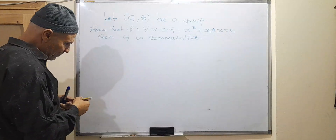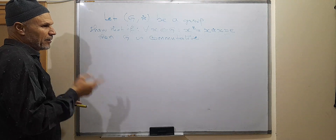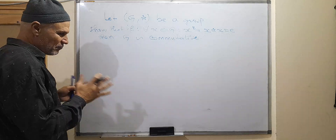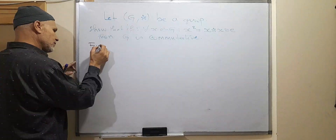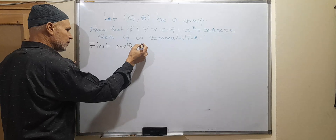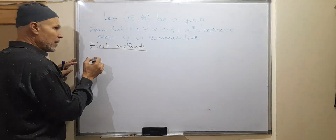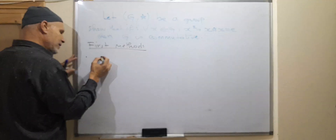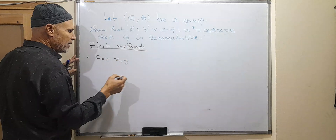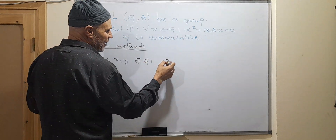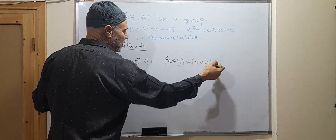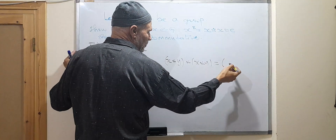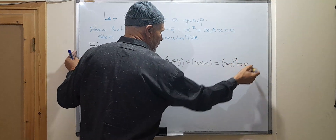We have at least two methods, but we can extend them to three. First method: from this assumption, for x and y from G, we have x star y star x star y — denoted briefly as (xy)² — this is equal to e.